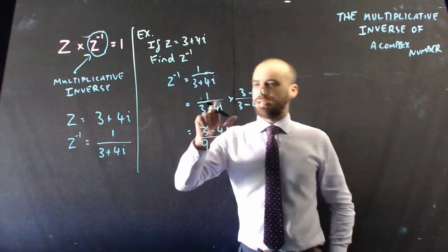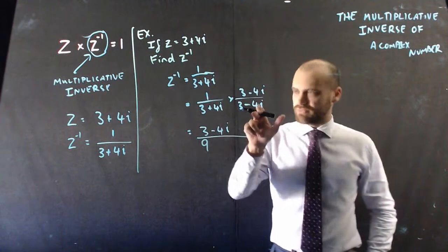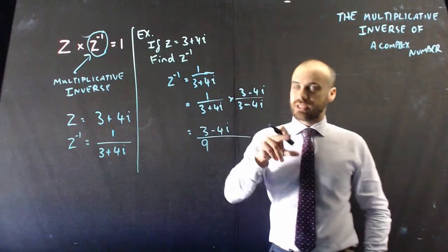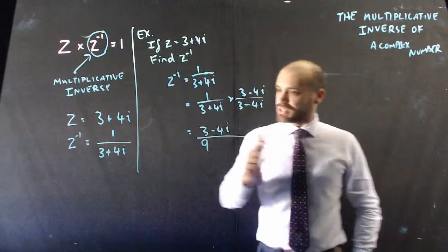And then, be careful here. 4 times negative 4 is negative 16. But i times i is i squared, which is negative 1. So negative 16 times negative 1 is positive 16. Boom.